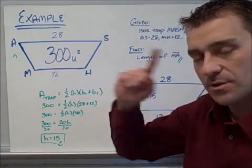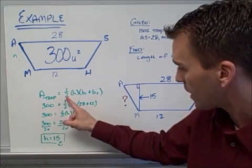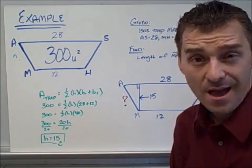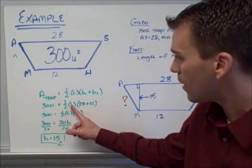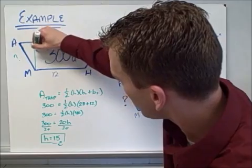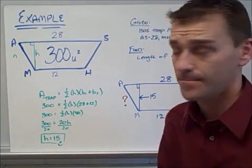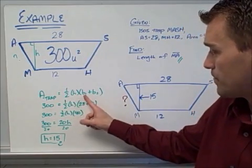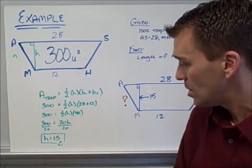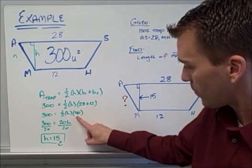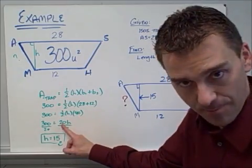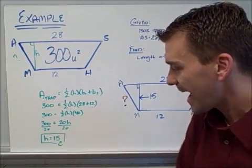I have a trapezoid and I know the area, so I write the area formula: one-half times h times (B1 + B2). I know B1 is 28 and B2 is 12, and the area is 300, but I don't know the height. I plug in what I know: 300 equals one-half times h times (28 + 12). Adding the bases gives 40, so 300 equals one-half times 40 times h, which simplifies to 300 equals 20h. Dividing both sides gives h equals 15.